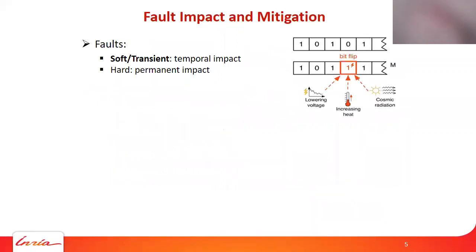Fault occurrence is generally characterized as two types. One is the transient fault, which causes temporal impact. The other is the hard fault, which can cause permanent impact. Since transient faults happen more commonly, in this work we focus on transient faults.